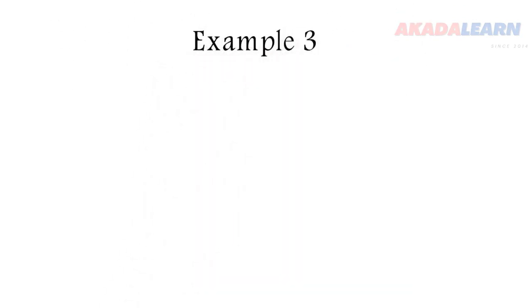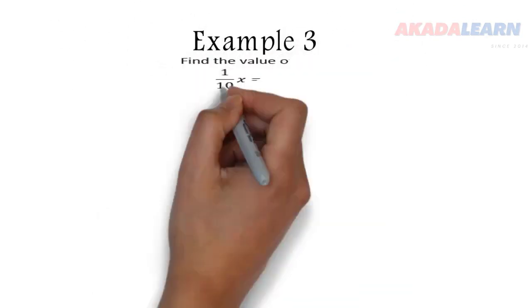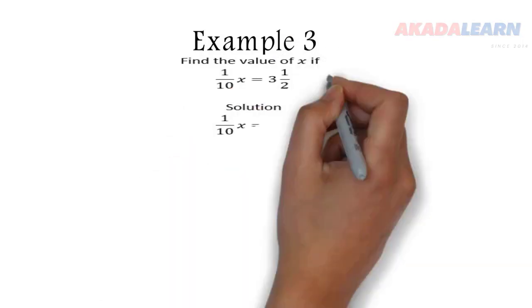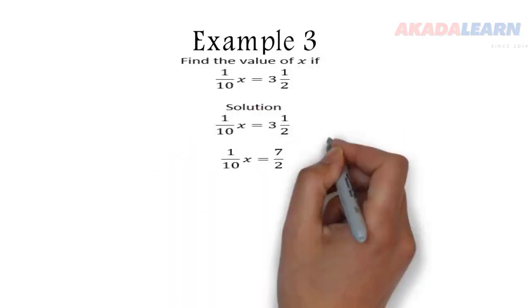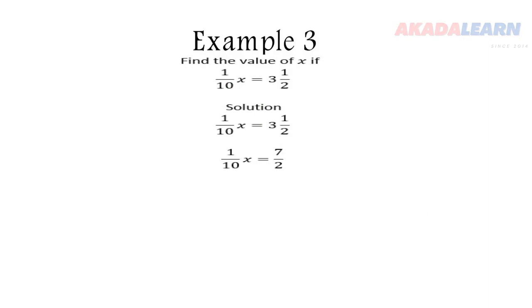Let's move ahead. Example 3: find the value of x if (1/10)x = 3 1/2. First thing, we will convert the mixed fraction to improper fraction. The next thing, to make x stand alone, I need to multiply both sides of the equation by 10. When we do that, you see 10 divided by 2 is 5, and 5 times 7 is 35. So our x is 35.